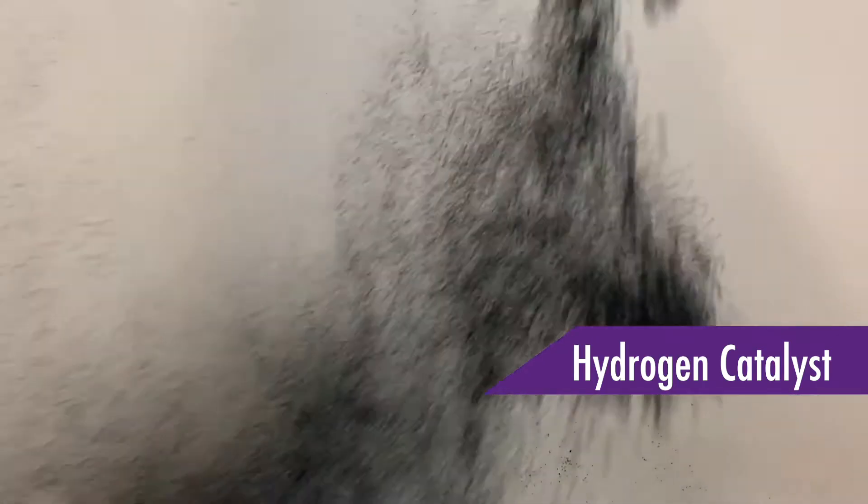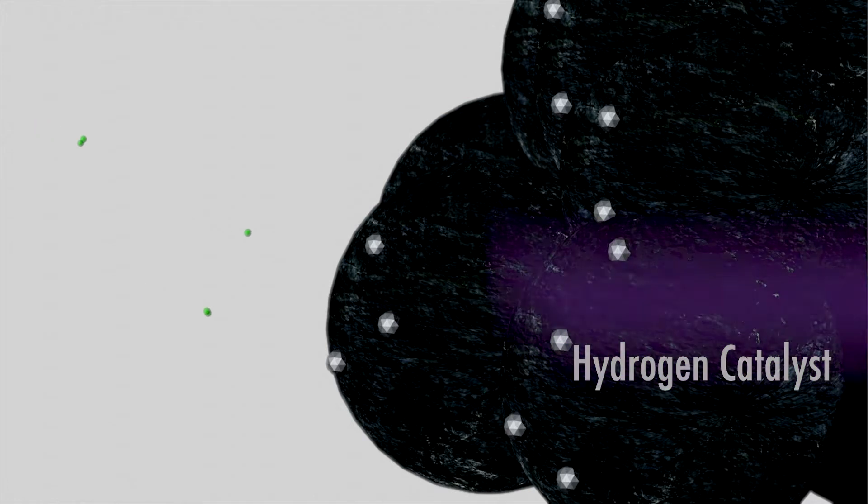An essential component of this is the hydrogen catalyst. This is currently made from platinum nanoparticles supported on carbon. The hydrogen catalyst either oxidizes the hydrogen if the battery is discharging or reduces the hydrogen if the battery is charging.